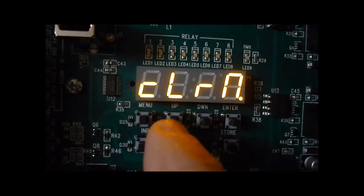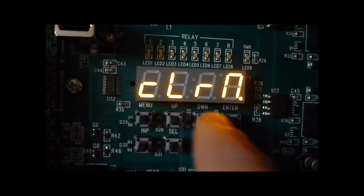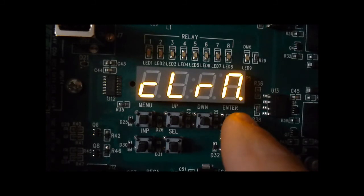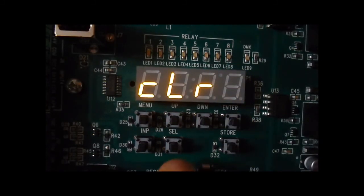To clear memory or reset to factory defaults, go to the clear memory item, press enter, and then at this prompt press the select button. The unit will reset to factory defaults and restart.